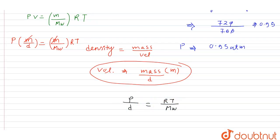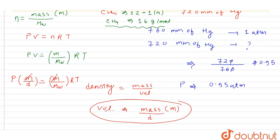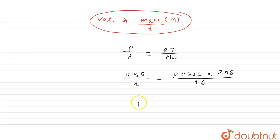Now we'll put in the values. Pressure is 0.95 atm, R is 0.0821 liter-atm per mole per Kelvin, temperature is 298 Kelvin, and molecular weight of methane is 16 grams per mole. So density equals 16 times 0.95 divided by 0.0821 times 298. When we solve this, the answer comes out to approximately 0.62 grams per liter.